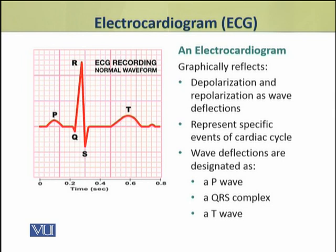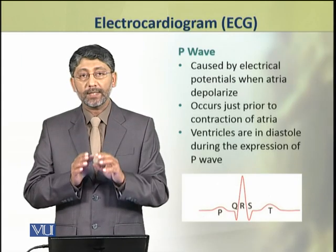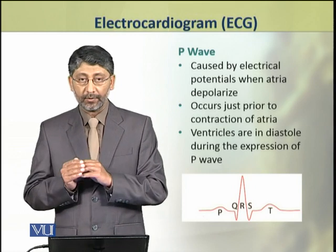In wave deflections we have multiple designations and multiple segments. We have three major wave deflections. The first wave is a P wave, the second wave is a QRS complex. Now we shall discuss these three major waves in detail.